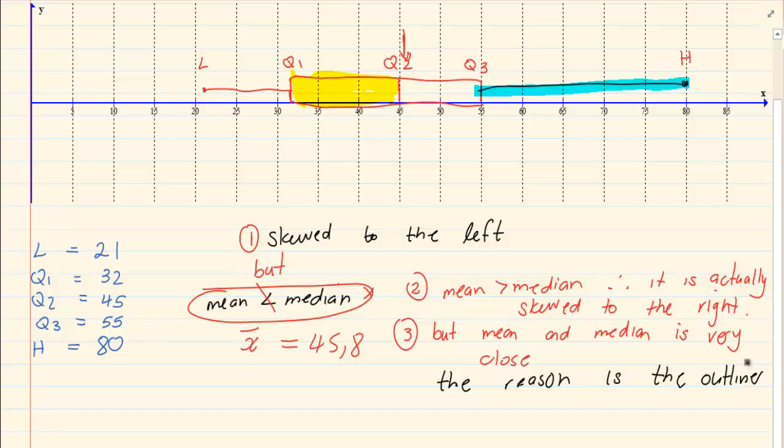That outlier, which is a high outlier, increased our mean. It increased our mean. That is what it did. High outliers increase your mean. Low outliers decrease your mean. So, the reason is the outlier increased the mean.